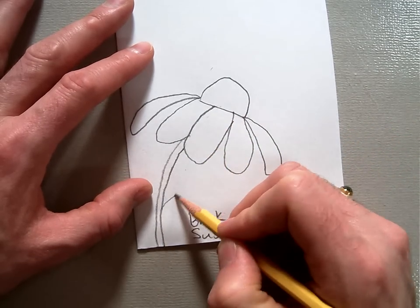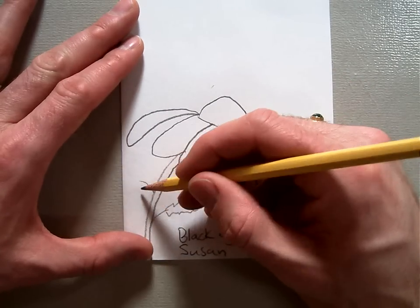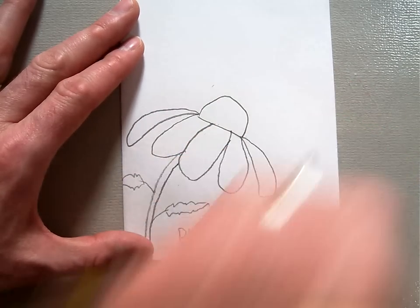And again, with the daisy, they have kind of a scraggly little leaf that comes off like that, and maybe a scraggly little leaf that comes off like that.